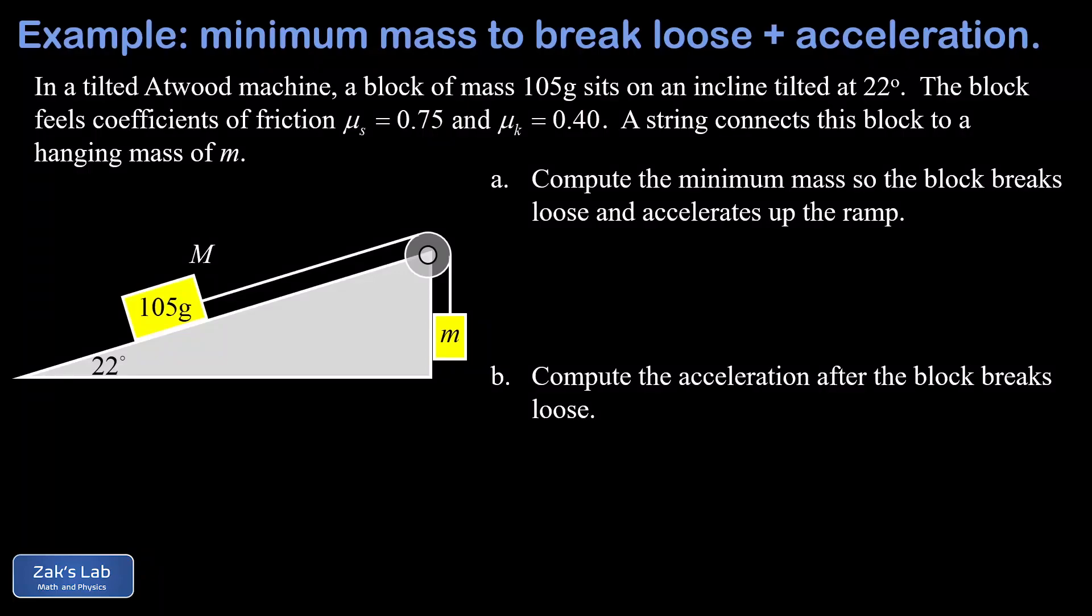In this video, we're looking at a tilted Atwood machine where we have a 105-gram block sitting on a ramp tilted at an angle of 22 degrees, and it feels friction at that interface. It's going to feel a static friction coefficient of 0.75, and when it begins to slide, it'll feel a kinetic friction coefficient of 0.40.